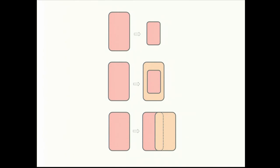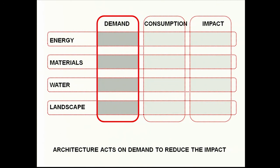With this I finish, reconciling these three approaches to control the quantity of architecture: one is the amount, another is the intensity, and another is sharing — in order to control the demand from the point of view of design, from the beginning of the design process, to control the demand of energy, material, water, and land. I think that architecture acts on demand to reduce impact. It does not act on the final impact — it acts on demand. In this way we can reduce the impact on the world and on the environment. Thank you very much for your attention.